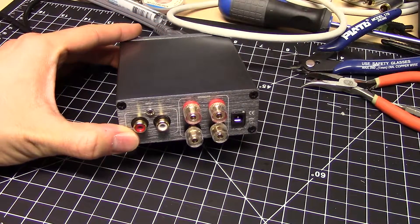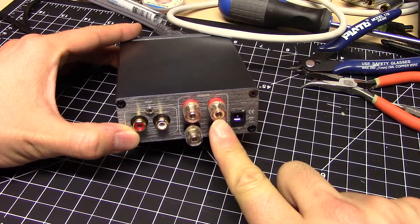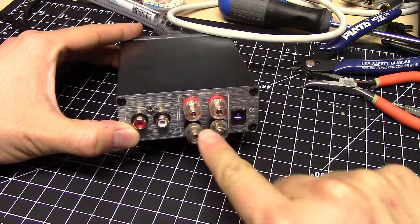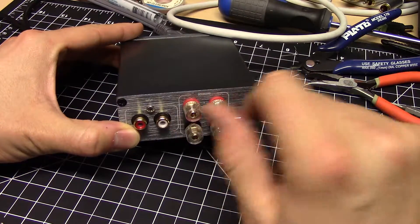On the back we have two RCAs and binding posts which can accept wires, but you can also put banana plugs in these, which is very handy.